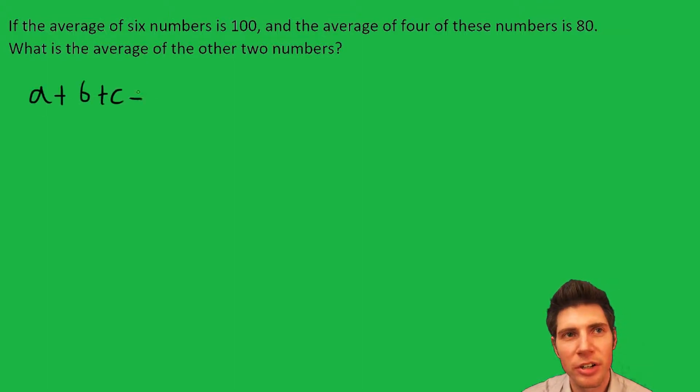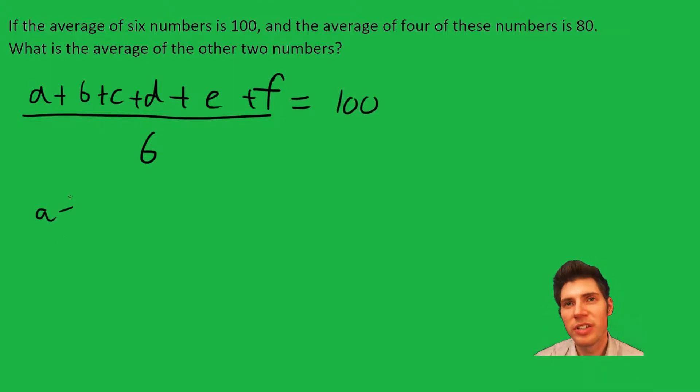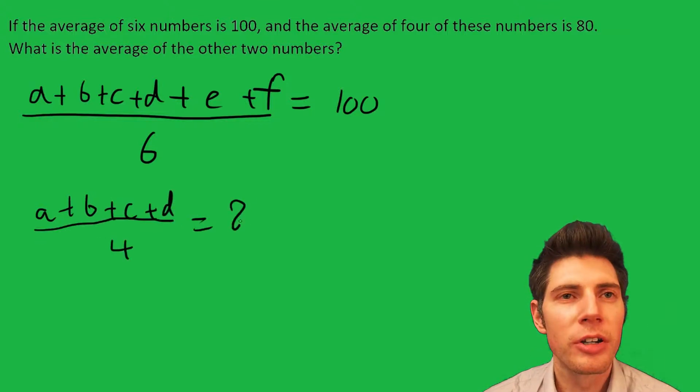So first, the average of six numbers is 100. We'll call that (a+b+c+d+e+f)/6 = 100. Then the average of four of these numbers is 80, so we'll say that's (a+b+c+d)/4 = 80.